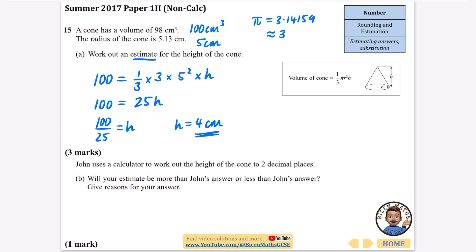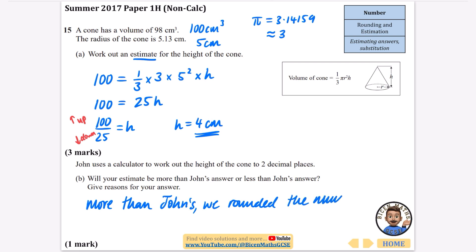Part b asks: will our estimate be more or less than John's calculator answer? For the numerator we rounded up, and for the denominator we rounded down. Making the numerator bigger and the denominator smaller corresponds to an overestimate. So our answer is going to be more than John's, because we rounded the numerator up and the denominator down.